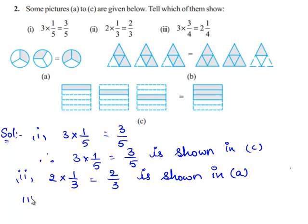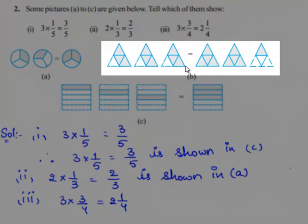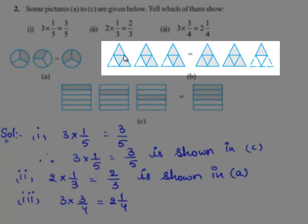So now let us consider the third fraction. It is 3 times of 3 by 4, which is equal to 2 and 1 by 4. When we observe the drawing in B, this is a triangle which is divided into 4 parts. There are 3 such triangles. In each triangle, out of the 4 parts, 3 parts are shaded. Therefore, each triangle represents a fraction 3 by 4. Since there are 3 such triangles, this represents 3 times of 3 by 4.